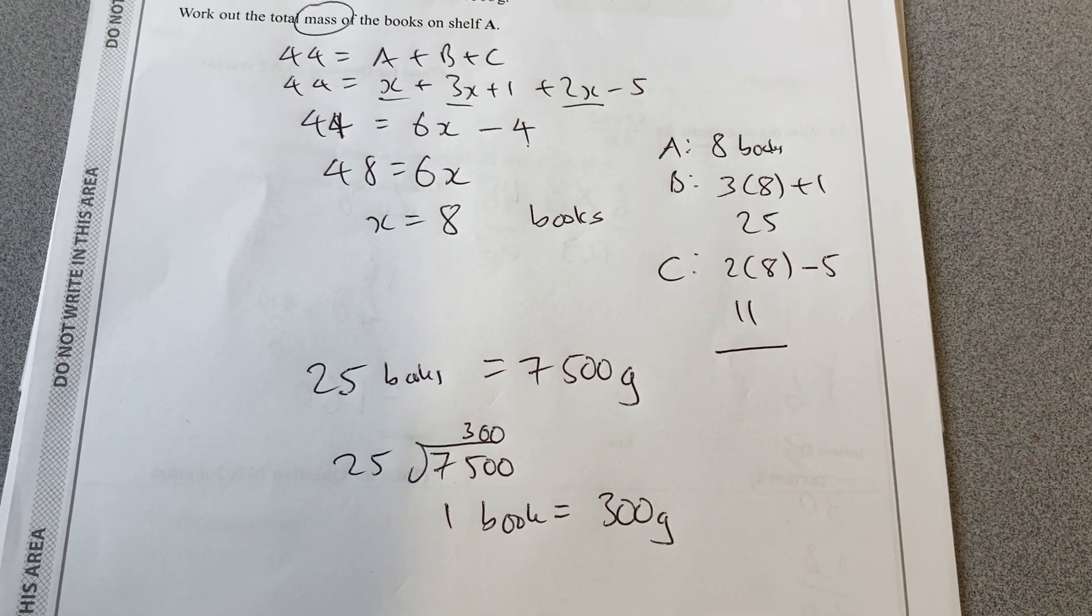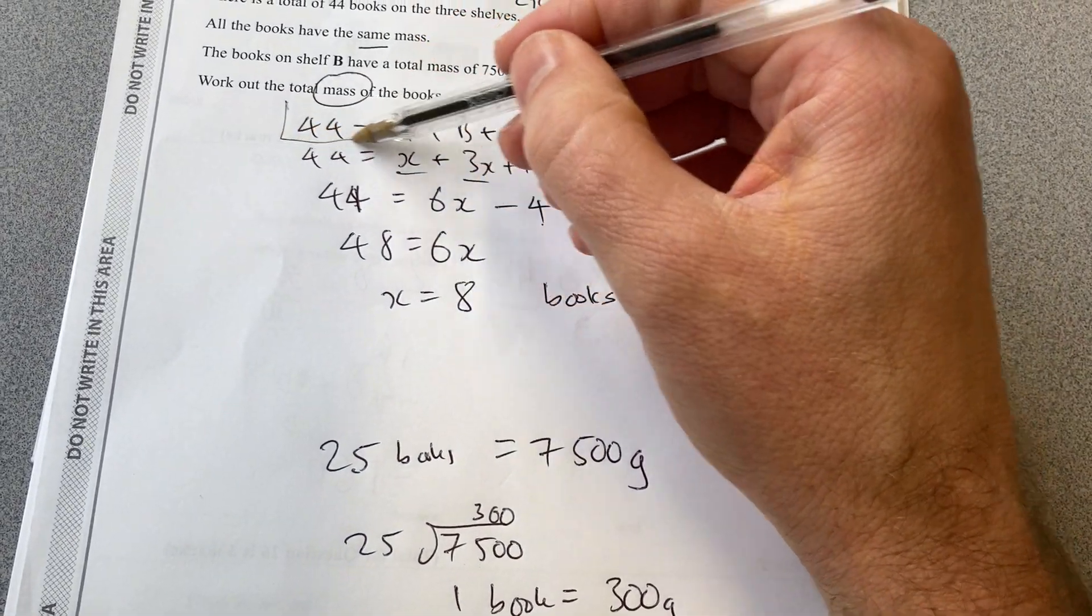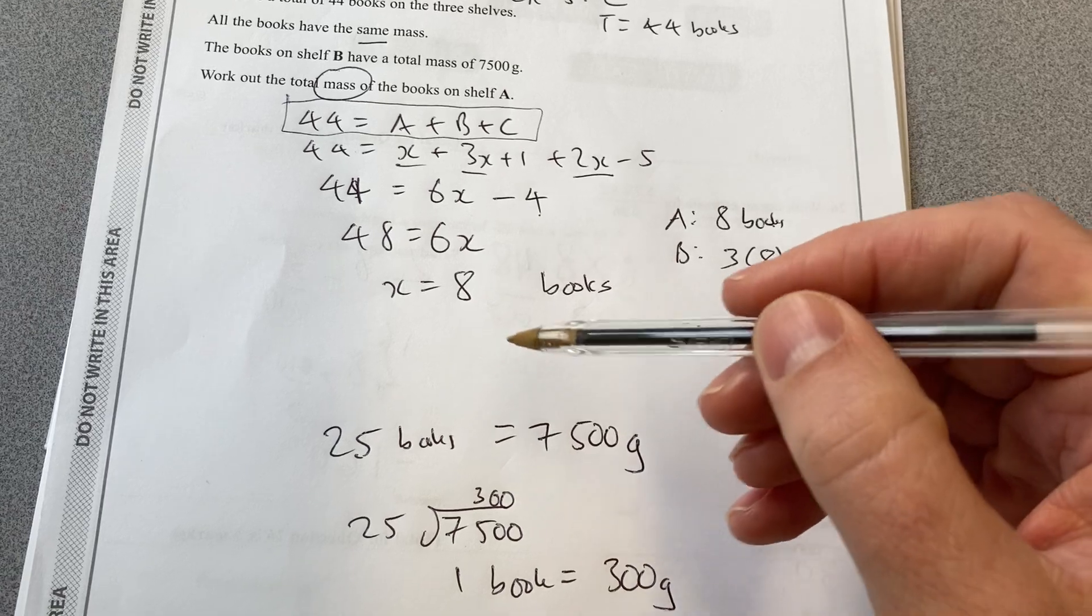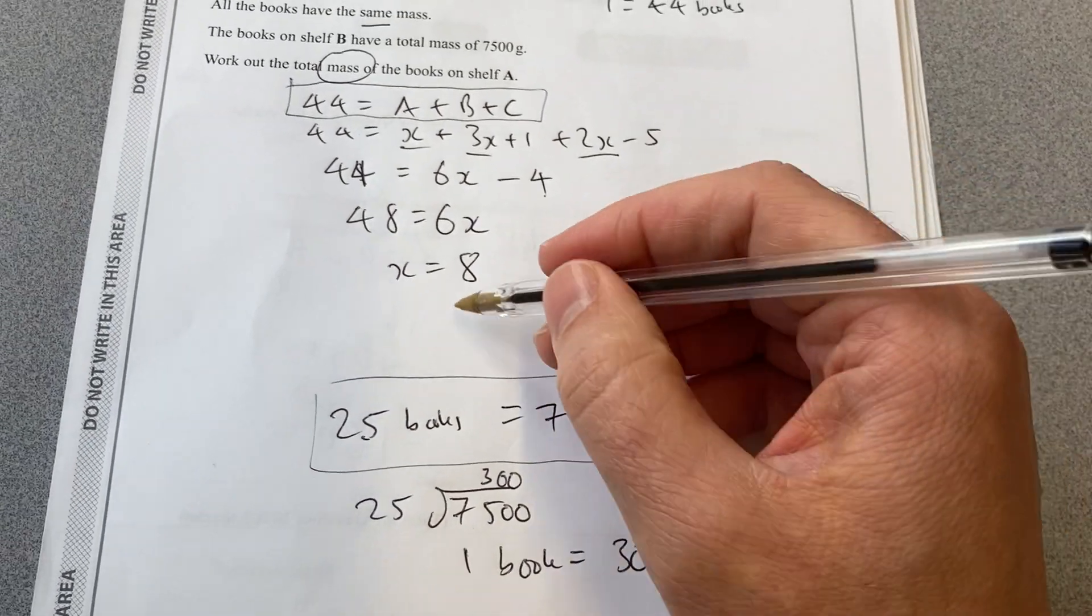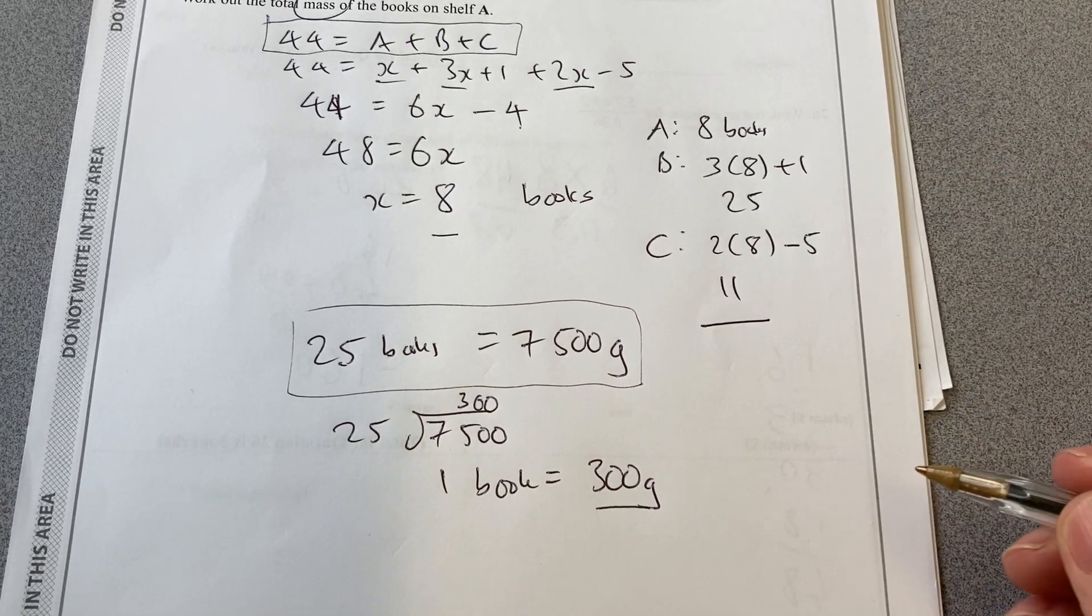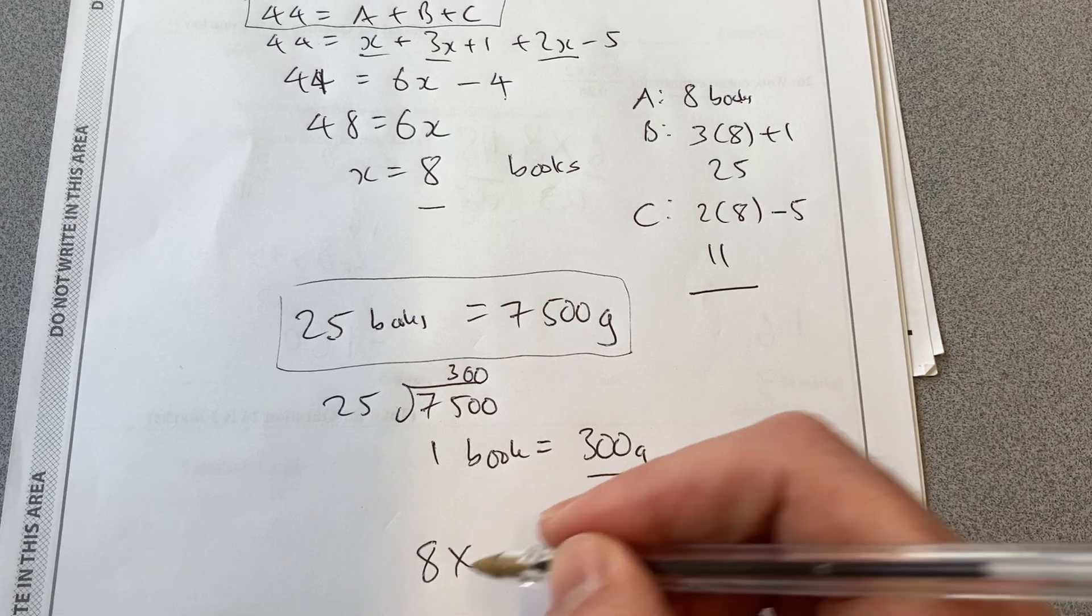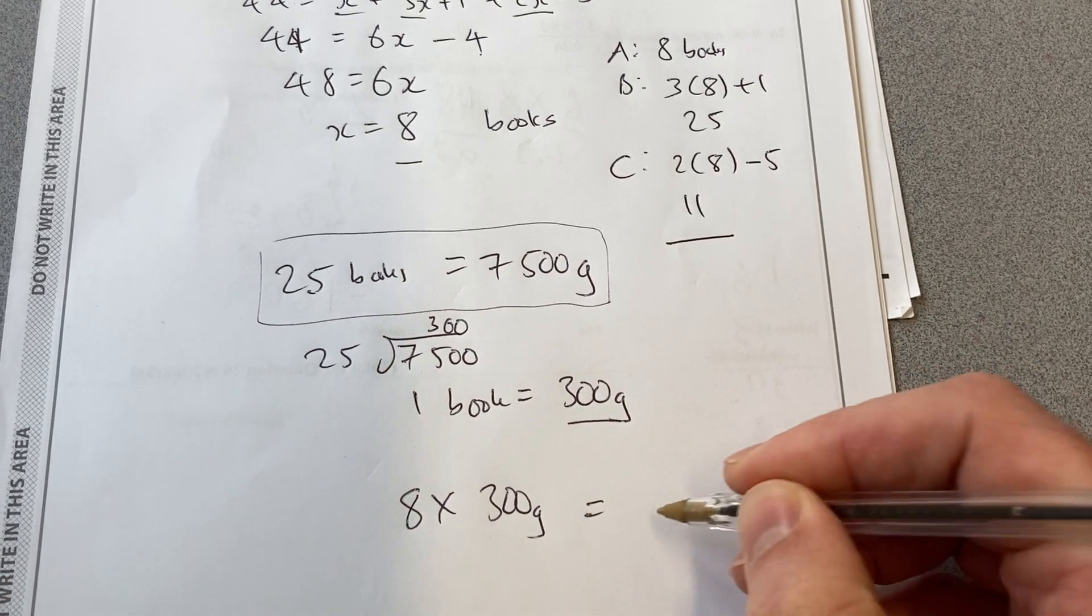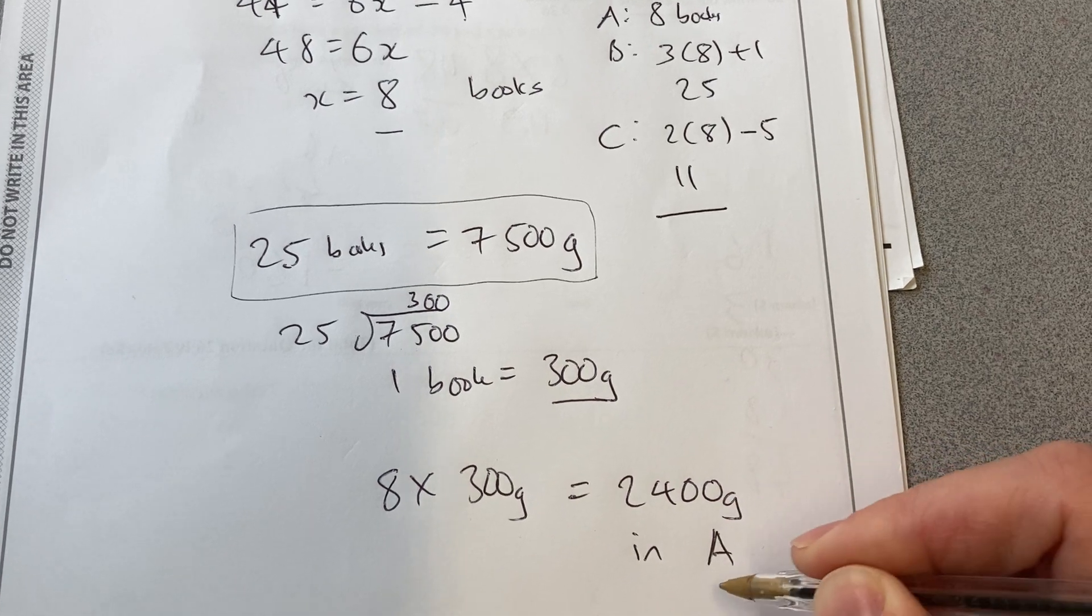Still not the end of the question, because I now need to combine those two pieces of information. I firstly found the number of books, and then the weight of the books. Now I need to combine them to find the weight of books in A. So if A has 8 books, and each book is 300 grams, I need to do 8 times 300 grams, which gives 2,400 grams in shelf A.